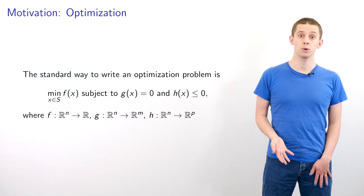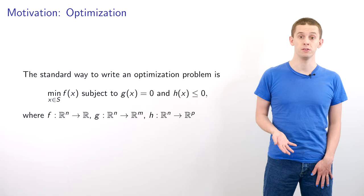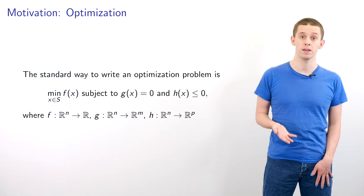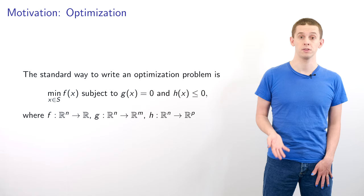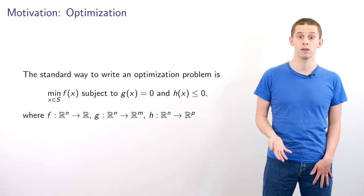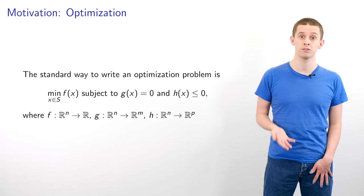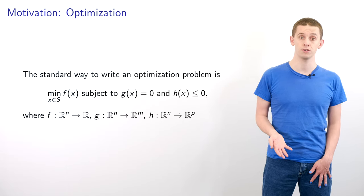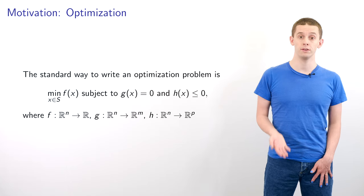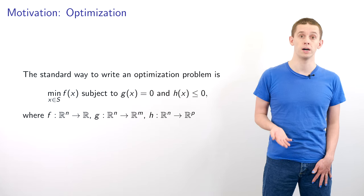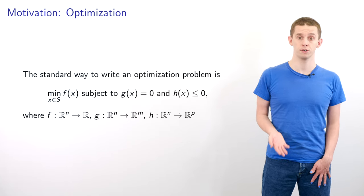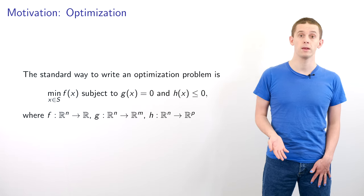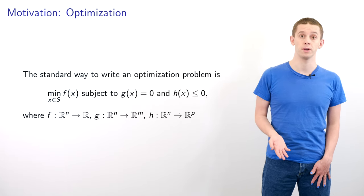And the standard way to write an optimization problem is to say that we want to minimize f of x for x in our feasible set s subject to constraints g of x equals 0 and inequalities h of x is less than or equal to 0. And here f is a function from R^n to R, g is a function from R^n to R^m and h is a function from R^n to R^p.